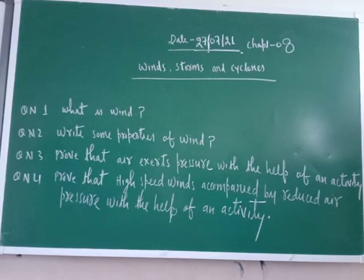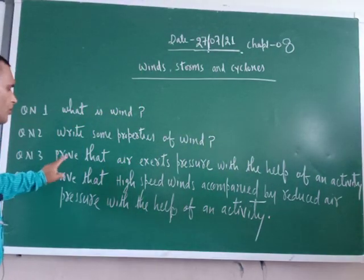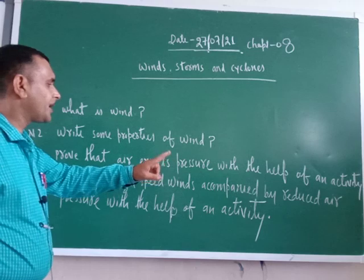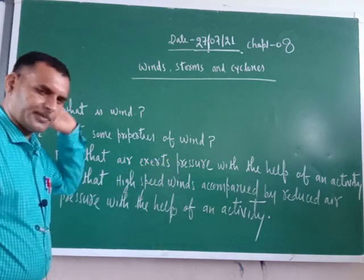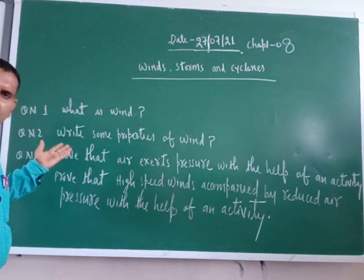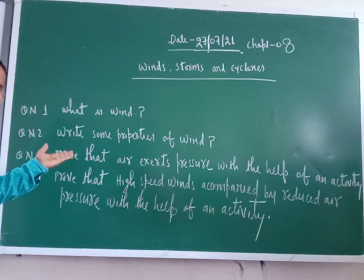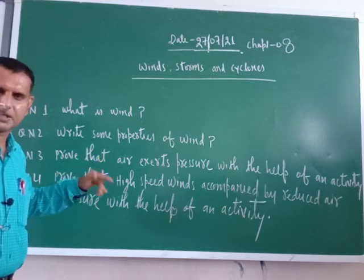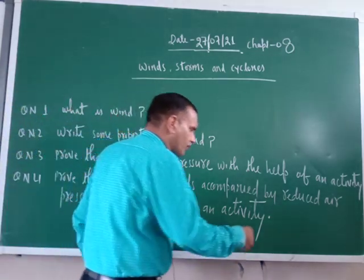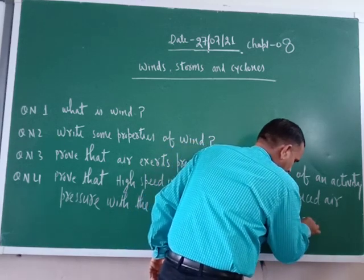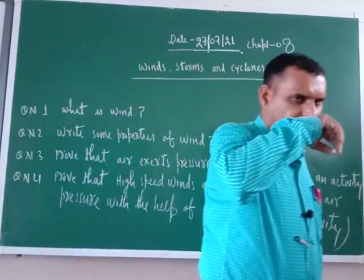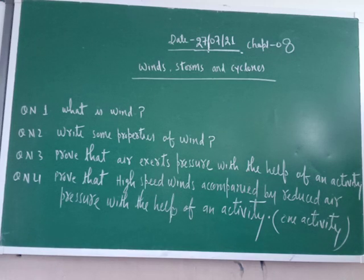Now note down these questions: What is wind? Write some properties of wind. Prove that air exerts pressure with the help of an activity. Prove that high speed winds are accompanied by reduced air pressure with the help of an activity. For question number four, three activities are there, but you only need to write one activity in your answer.